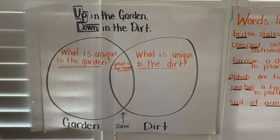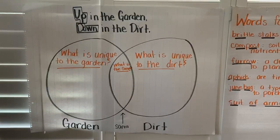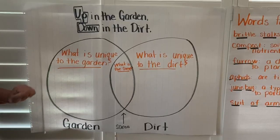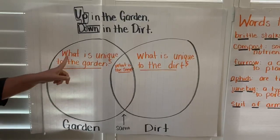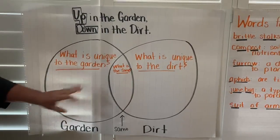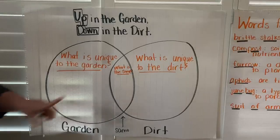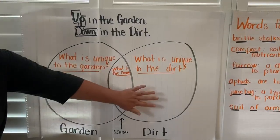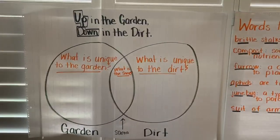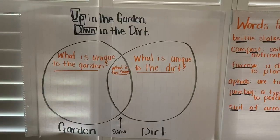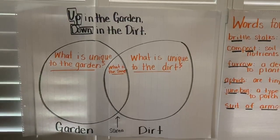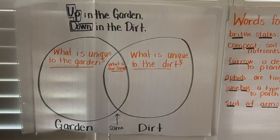You might need to listen to the story several times to get some ideas to put into our Venn Diagram — thinking what is unique to the garden above the soil, what is unique to the dirt in the soil, and then what is the same for both. Anything that is unique for either one, feel free to put on your chart, then you may load it up into your portfolio.